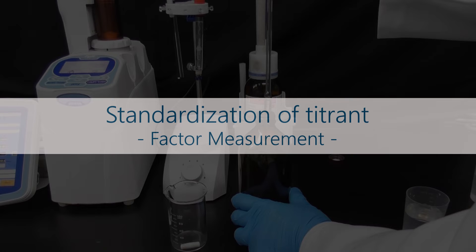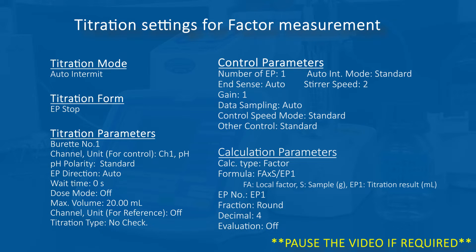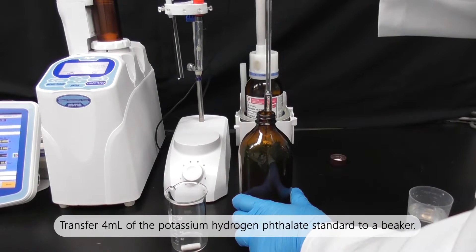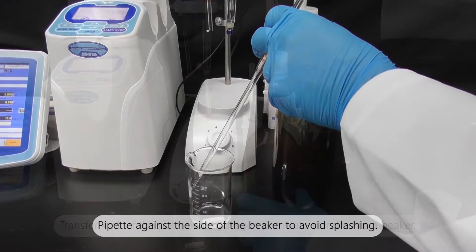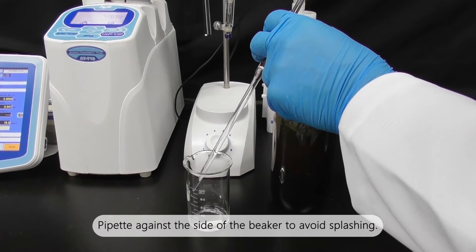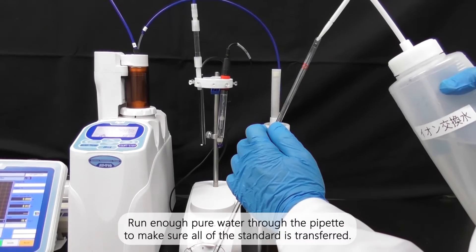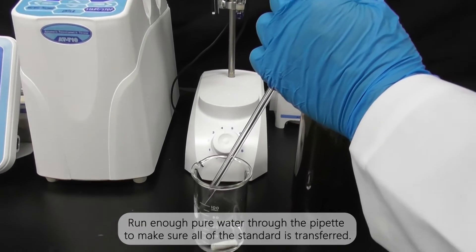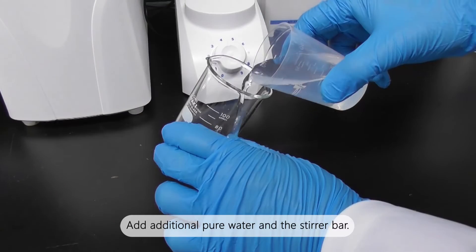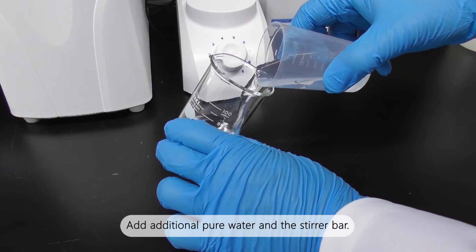Standardization of titrant, factor measurement: Transfer 4 mL of the potassium hydrogen phthalate standard to a beaker. Pipette against the side of the beaker to avoid splashing. Run enough pure water through the pipette to make sure all of the standard is transferred. Add additional pure water and the stirrer bar.